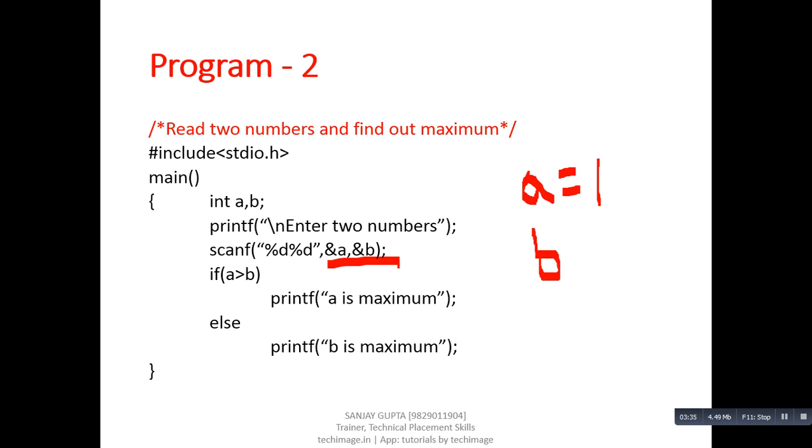Now if we put these two values inside this condition, is 1 greater than 10? The condition is false, so it will print 'b is maximum'.